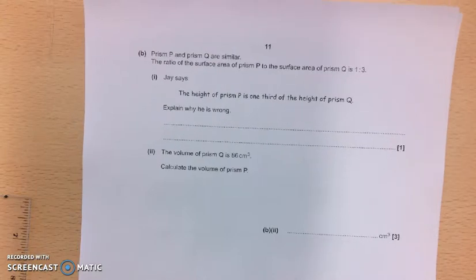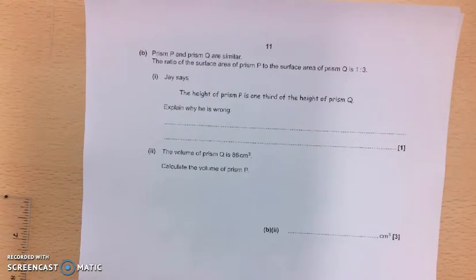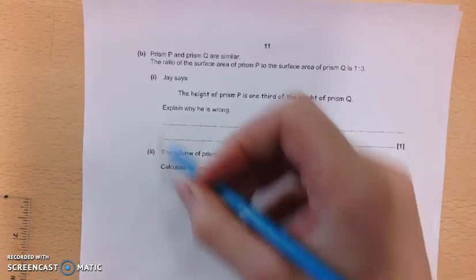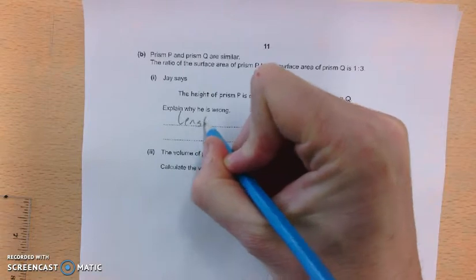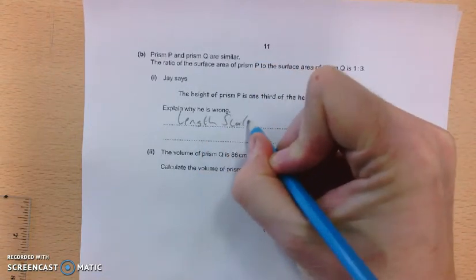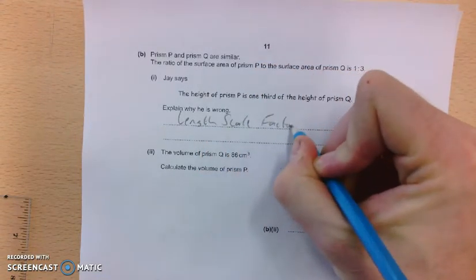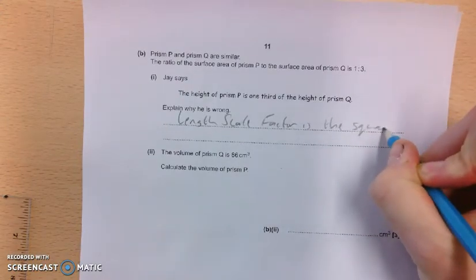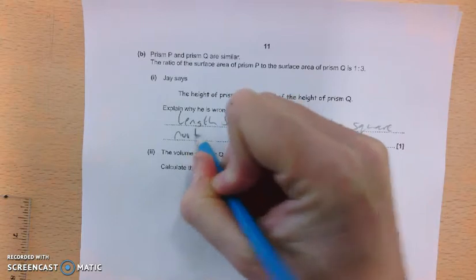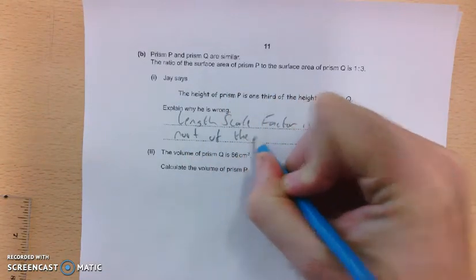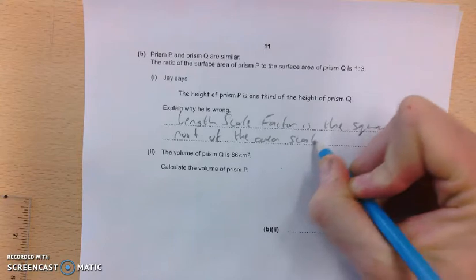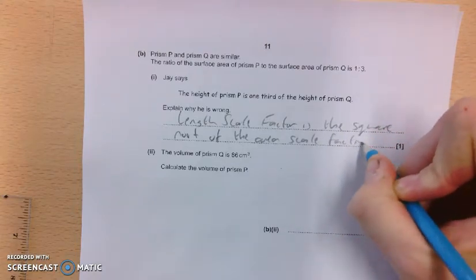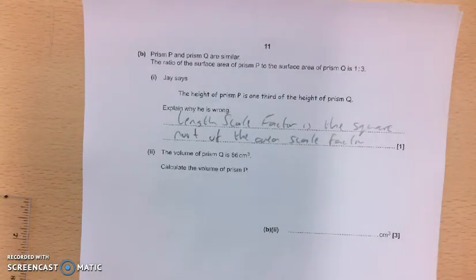So the relationship is that whatever the length scale factor is, you're going to square that to get the area scale factor. So the length scale factor is the square root of the area scale factor. Which is why the scale factor is not 3 or 1 third if you go in that direction.